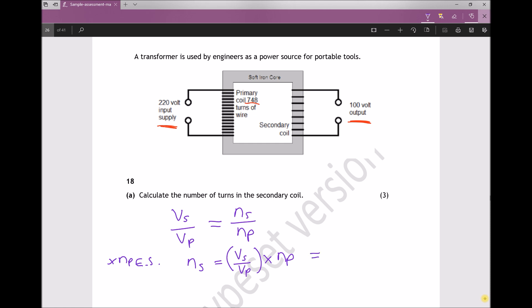And inputting some values here: the voltage on the secondary coil is 100, the voltage on the primary is 220.